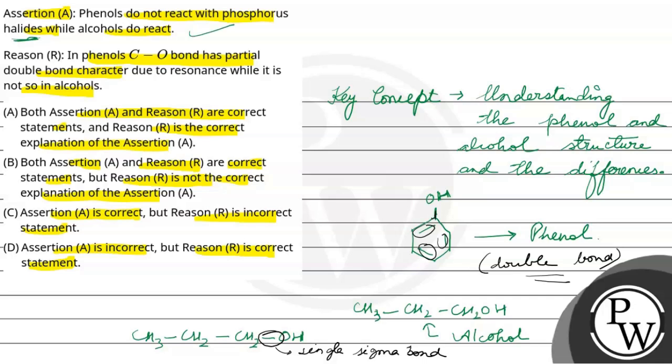Phenols have a stabilized C-O bond due to resonance. This is the reason that in phenols, the C-O bond has partial double bond character due to resonance while it is not so in alcohols. The C-O bond in phenol shows resonance and the electrons are delocalized, but in alcohols it's a single sigma bond. That's why both assertion and reason are correct, and the reason is the correct explanation of the assertion. The answer is A. Thank you, hope you have understood. Best of luck.